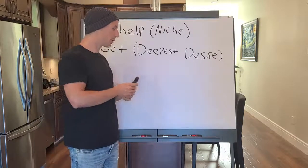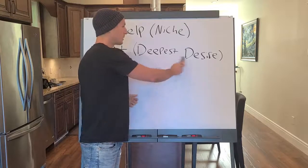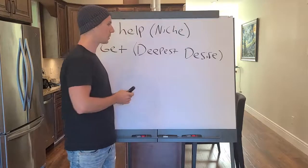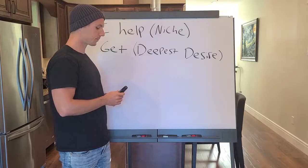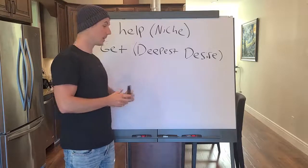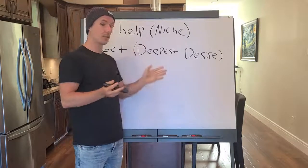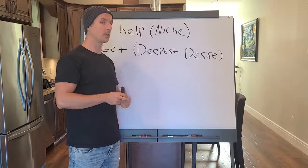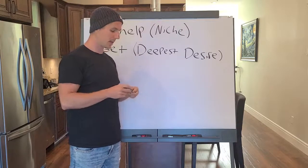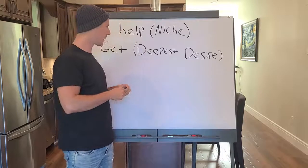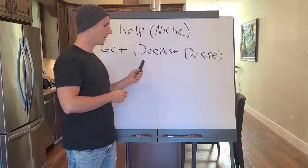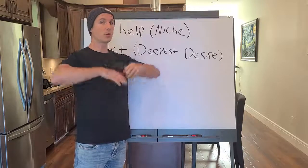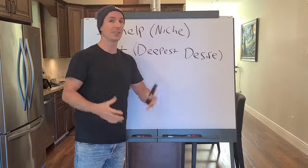Think about the result they want to get — the deepest desired result. Not just something nice to have, but really, really clear. You don't want to be vague; it needs to be super obvious. You can't say something like 'I help moms get more freedom' — freedom is super vague. It's the definition of vague. Freedom to do what?